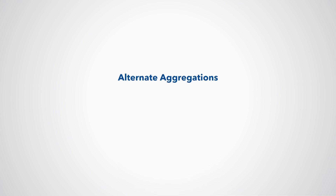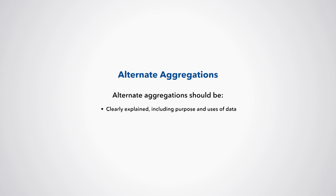This does not mean that NSOs cannot produce alternative aggregations of CPI data to meet user needs. If alternative aggregations are compiled and disseminated, it is important that the headline index is clearly identified and defined. Any alternative aggregation should be clearly explained for users, including the purpose and uses of these data. Alternative aggregations should be identified as analytical series to avoid confusing users. To conclude, NSOs are faced with having to compile a single, multi-purpose CPI that meets a broad range of uses.